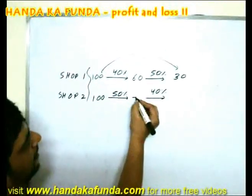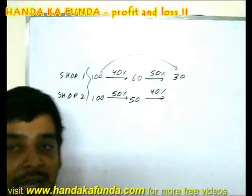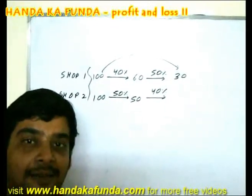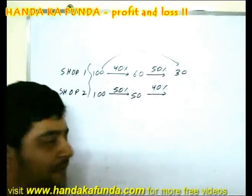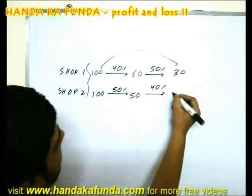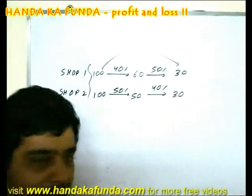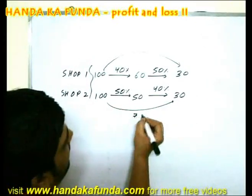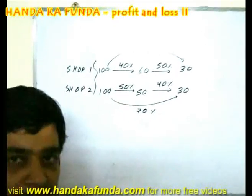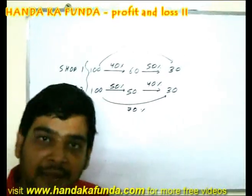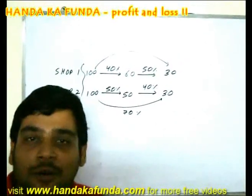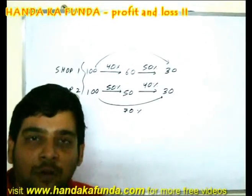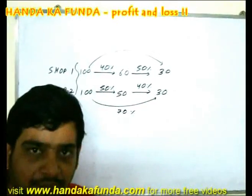Looking at Shop 2: a 50% discount takes you to 50 rupees, then another 40% discount on 50 — a discount of 20 rupees — takes you to 30 rupees. The total discount offered is also 70%. As you can see, the order of successive discounts does not matter; it is the overall discount which does.